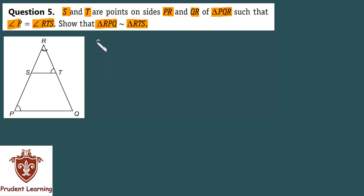Now let us solve the question. In triangle RPQ and triangle RTS, angle P is equal to angle RTS - this is given in the question. As well, angle R is equal to angle R. Two angles are common, so you can say...